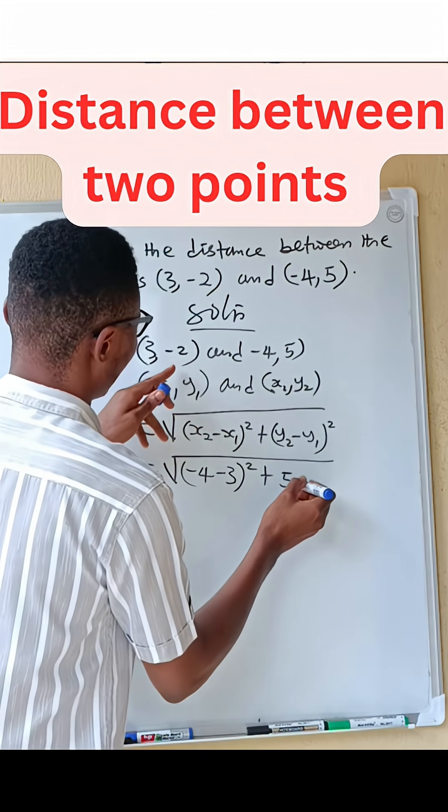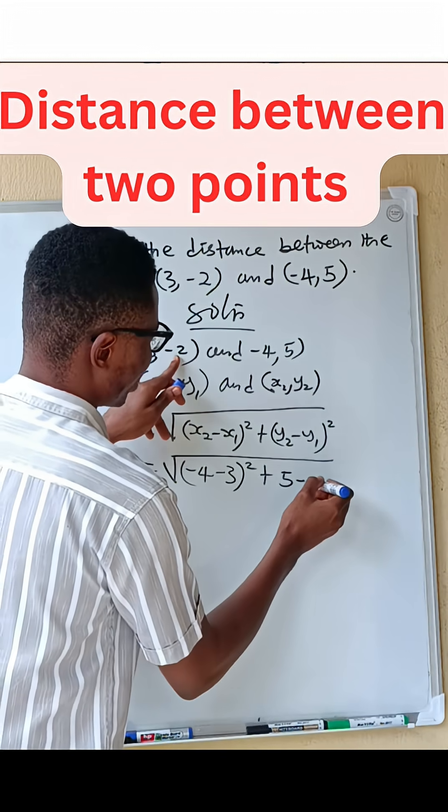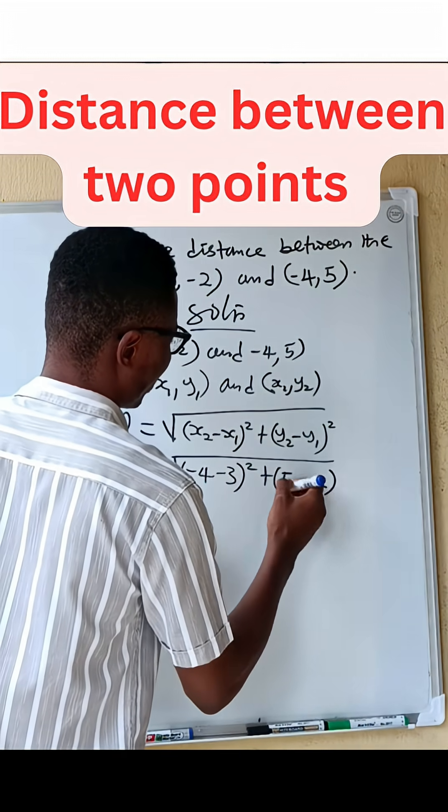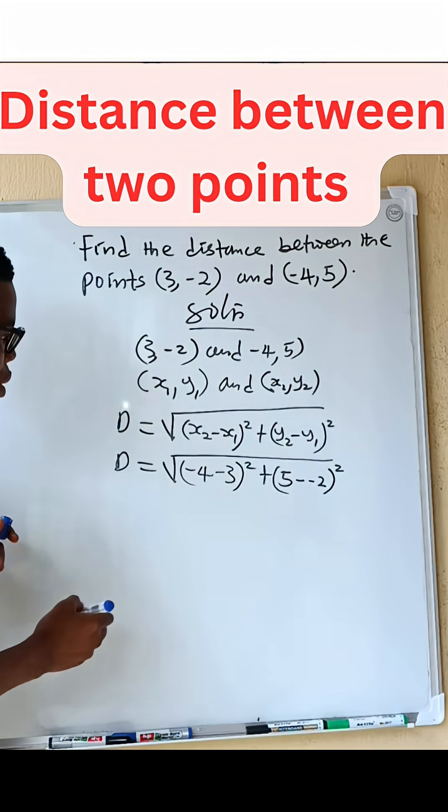All squared, plus your y2 is what? 5, while your y1 is -2, that is minus. We have all squared.